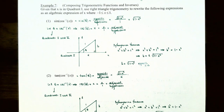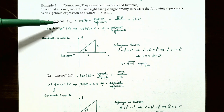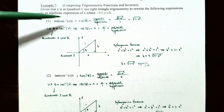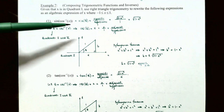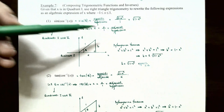Next, we'll find an algebraic expression for the composition of a trig function and its inverse. Example seven: composing trigonometric functions and inverses. Given that X is in quadrant one, use right triangle trigonometry to rewrite the following expressions as an algebraic expression of X, where X is between negative one and one inclusive. Number one: sine of inverse cosine of X. Let theta equal inverse cosine of X, meaning cosine of theta equals X. Cosine is adjacent over hypotenuse, so the adjacent side is X and the hypotenuse is one.